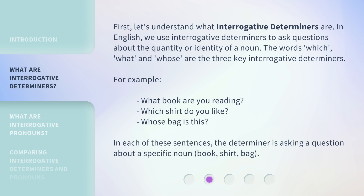For example: What book are you reading? Which shirt do you like? Whose bag is this? In each of these sentences, the determiner is asking a question about a specific noun — book, shirt, bag.